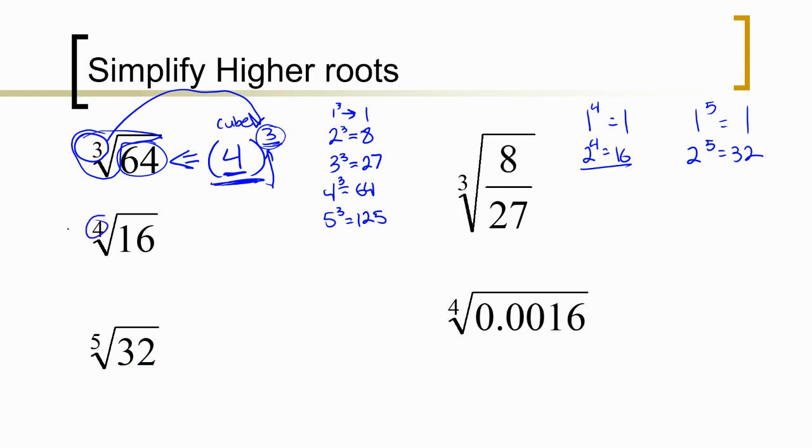Now, the next one here, you see this is a fourth root of 16. So we're trying to ask the question, what to the fourth power is 16? Looking at this number over here, I see that 2 to the fourth is 16. So that was the number we're looking for. The answer to the first one was 4. The answer to the second one is 2. We're asking what to the third power was 64? That was 4. What to the fourth power is 16? That's 2.